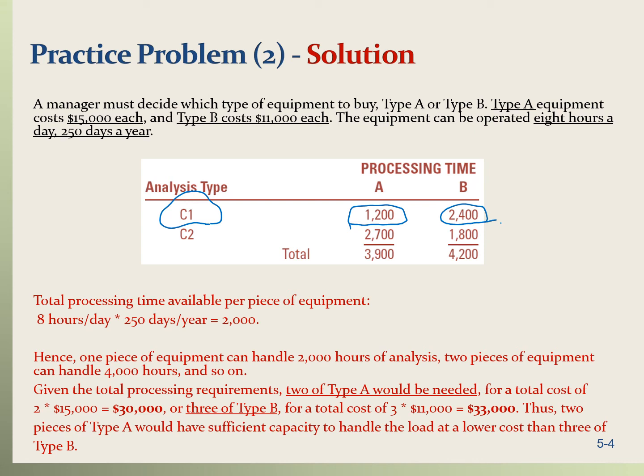For C2, it takes 3 hours processing time per unit on machine A. So for an annual volume of 900, we need 900 multiplied by 3, which is 2,700 hours. On machine B, it takes 2 hours per unit, so that's 2 multiplied by 900, which is 1,800 hours. Adding these up: machine A requires 3,900 total hours annually, and machine B requires 4,200 total hours annually.